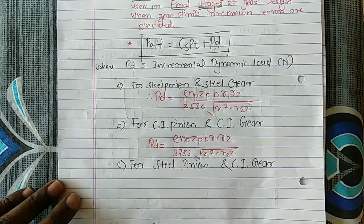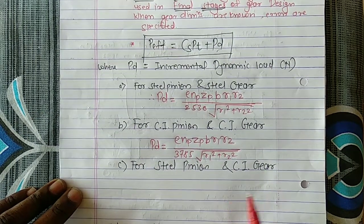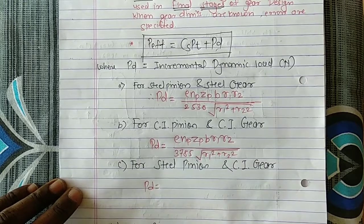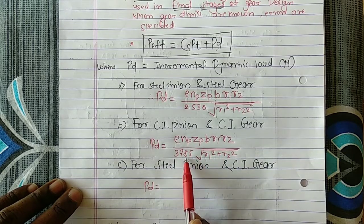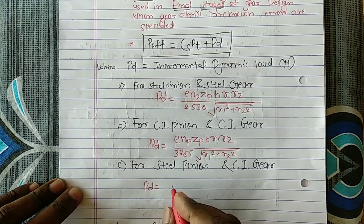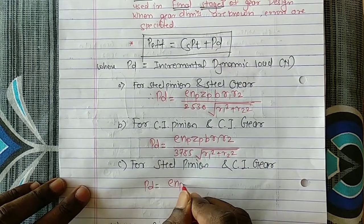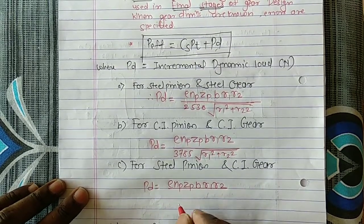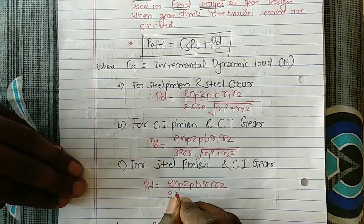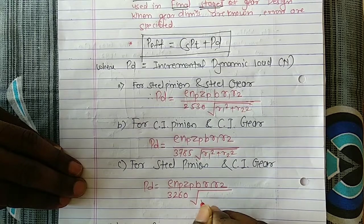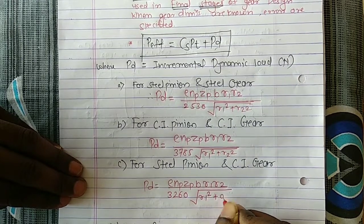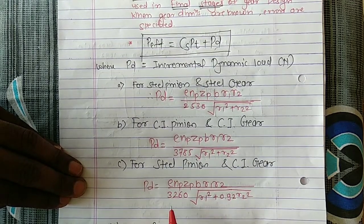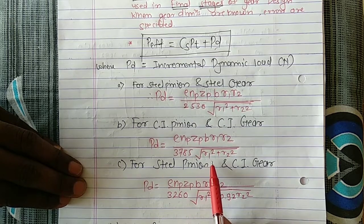If the pinion and gear are made of different materials — for example, pinion is steel and gear is cast iron — then P_D is given by: E × N_P × Z_P × B × R1 × R2 divided by 3260, under a square root of R1² + 0.92 × R2². The numerator remains the same; only the denominator constant and the R2 coefficient change.